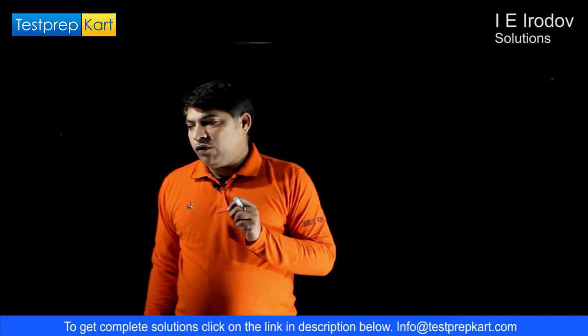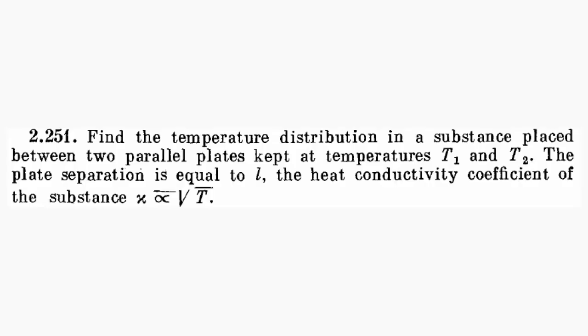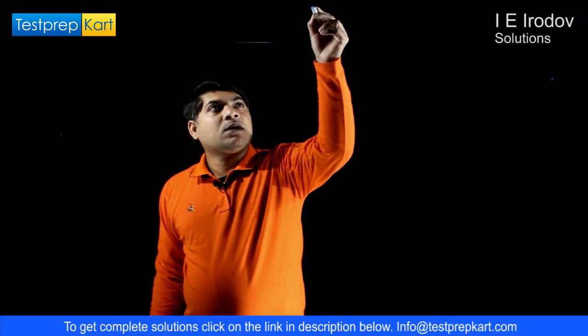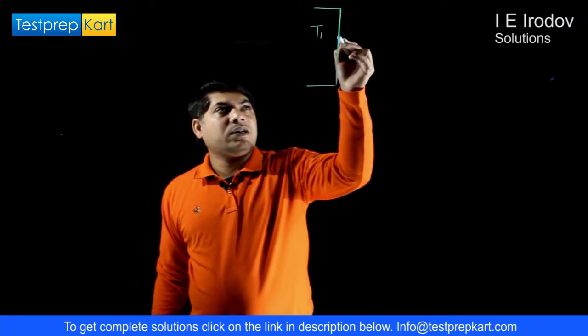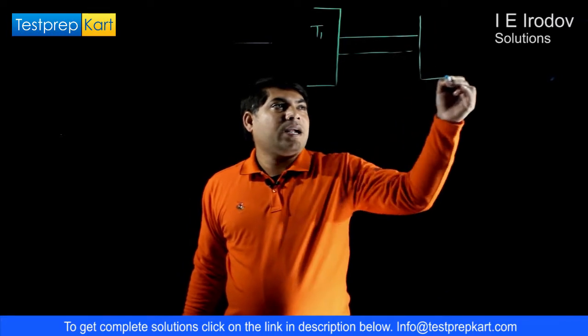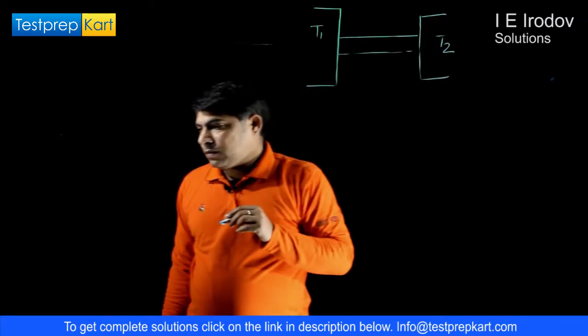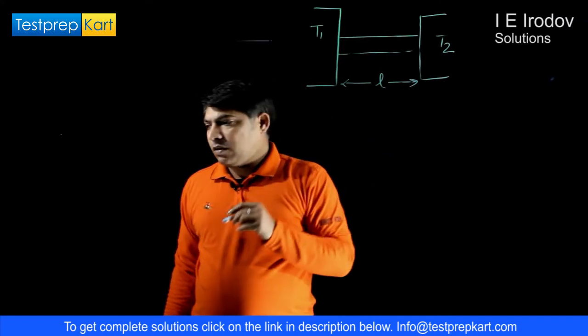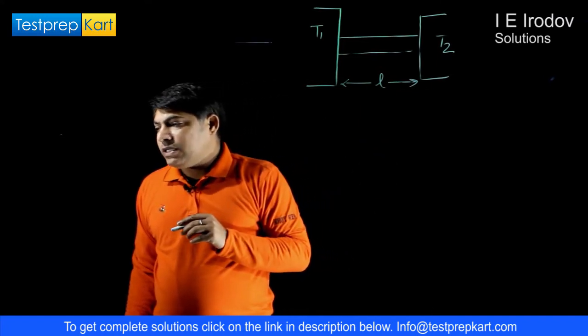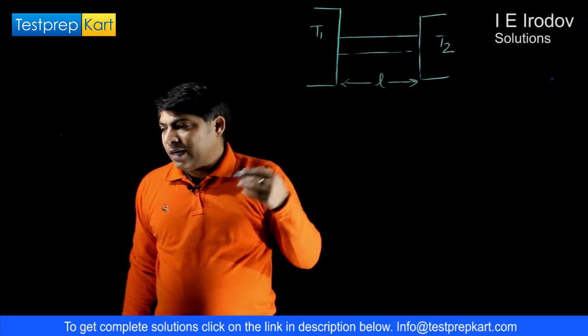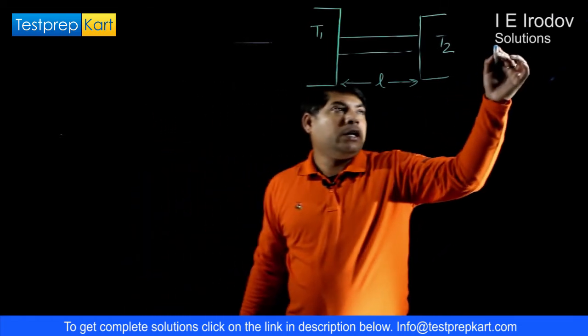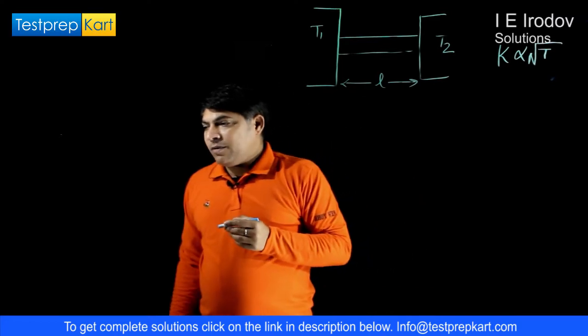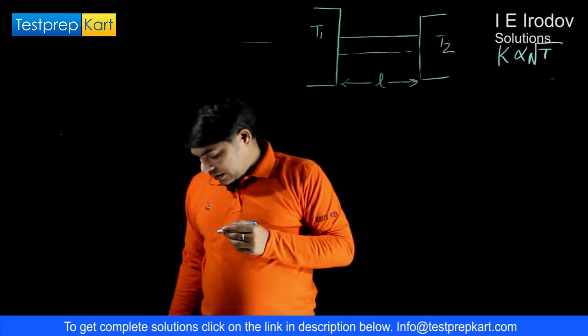Next question is 2.251. Find the temperature distribution in a substance placed between two temperatures, one is T1 and the second end is kept at temperature T2. The plates are separated by a distance L and the heat conductivity coefficient of the substance at any particular distance is proportional to root T. Here we have to find out temperature distribution in this substance.